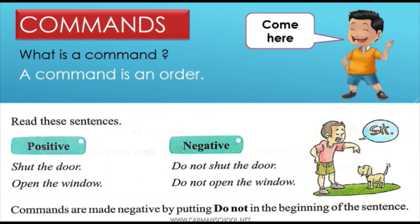Be good children — that is a positive sentence. Commands are made negative by putting do not at the beginning of the sentence. For example, Mama is telling you: do not go out of the house because there is a lockdown. Do not wipe your hands here and there. Do not eat before washing your hands. Are these all negative? Yes.